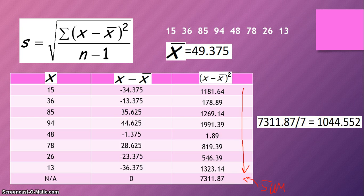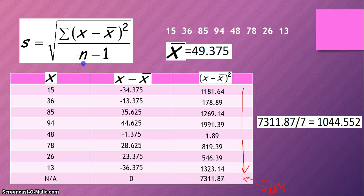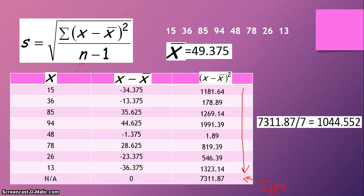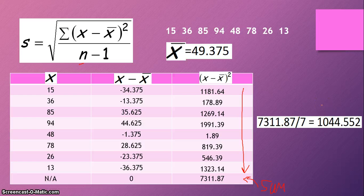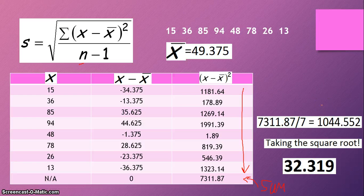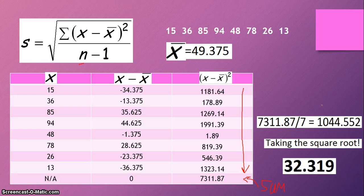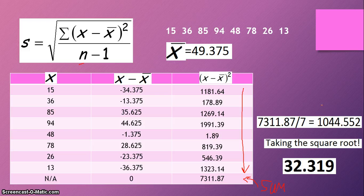And remember our n would be 8 in this case. So we have 1, 2, 3, 4, 5, 6, 7, 8 data points, and 8 minus 1 is obviously 7. And that gets us this 1044.552. We have to, of course, take the square root, and we get our standard deviation as 32.319. And that's essentially saying, on average, there's a difference of 32.319 between any individual data value and the mean.